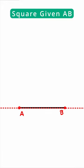To construct a square given AB, we need to start by extending the line. Then we're going to get our compass, and then we're going to be building equidistant arcs around A.